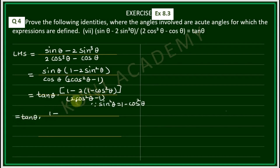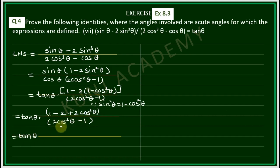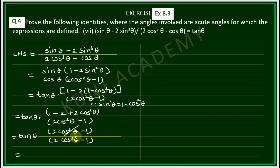The numerator becomes 1 - 2sin²θ. Using the identity, this is 1 - 2(1 - cos²θ) = -1 + 2cos²θ = 2cos²θ - 1. The denominator is also 2cos²θ - 1. These cancel. So we get sinθ/cosθ = tanθ, which is equal to the right hand side. Proved.